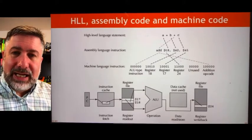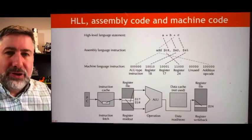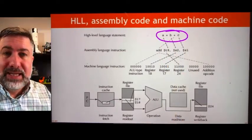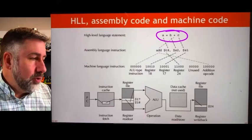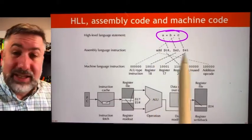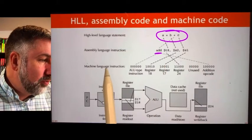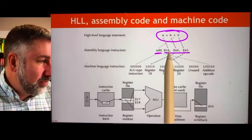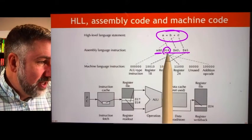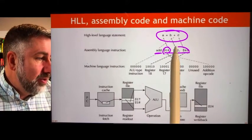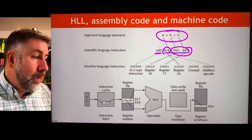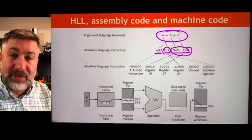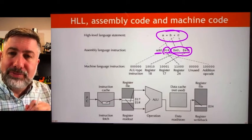In a high-level language, you write something like A equals B plus C. In assembly code, you specify the opcode first, then the operands. For MIPS, you specify the destination first and then the two sources. For example, 'add T8, S2, S1' — assuming those are the registers where A, B, and C are stored. These get translated into 32 bits of specification for what the machine should actually do.